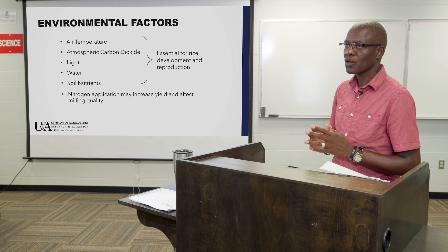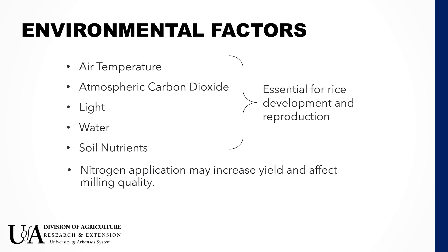Factors affecting both yield and quality can be classified into environmental factors and processing-related factors. Environmental factors include air temperatures, atmospheric carbon dioxide, light, water, and soil nutrients — all essential for rice development. Any deficiency in these parameters will translate into the quality of rice obtained. Nitrogen application is also very important for both yield and milling quality, as is the variety of cultivar being grown.